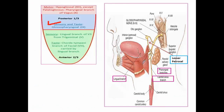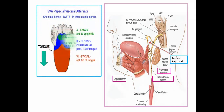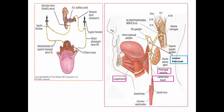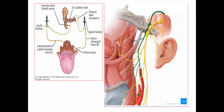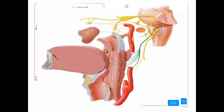What happens if the glossopharyngeal nerve is injured? Loss of sensation from the posterior one-third of the tongue. The glossopharyngeal supplies only one muscle — stylopharyngeus. It also supplies the palatine tonsil, posterior one-third of the tongue, the pharynx (sensory), and gives the carotid sinus reflex, and supplies the parotid gland parasympathetically.